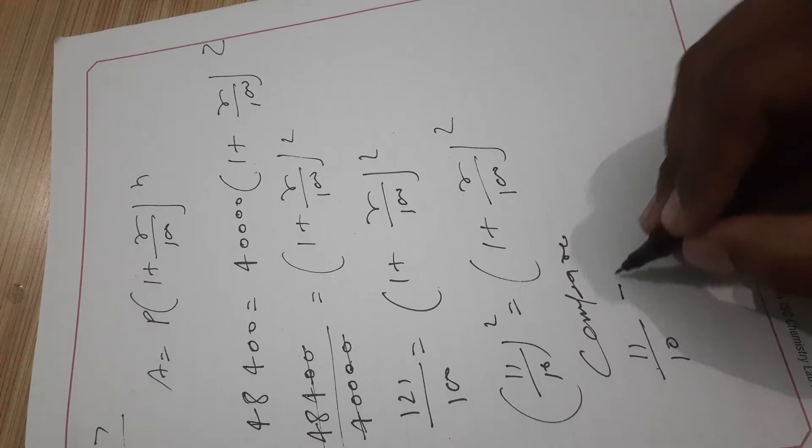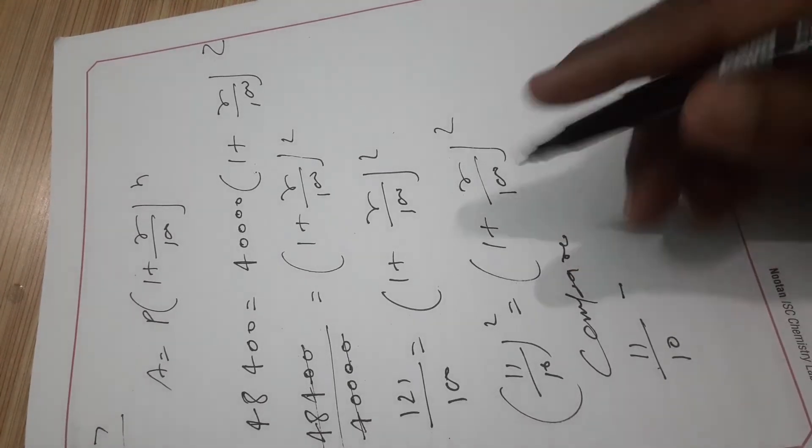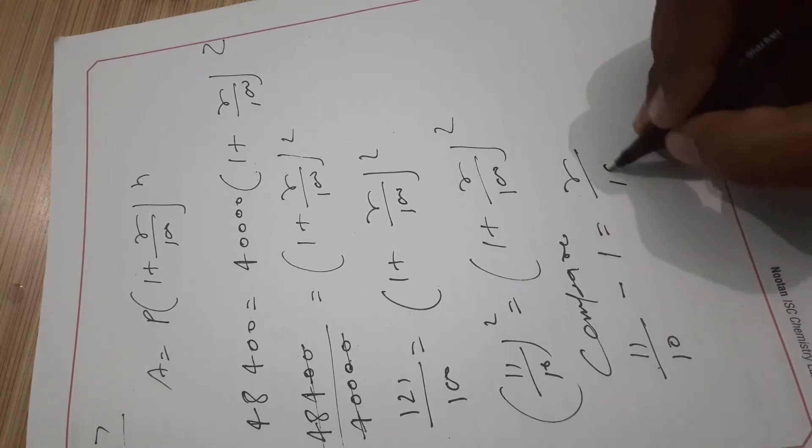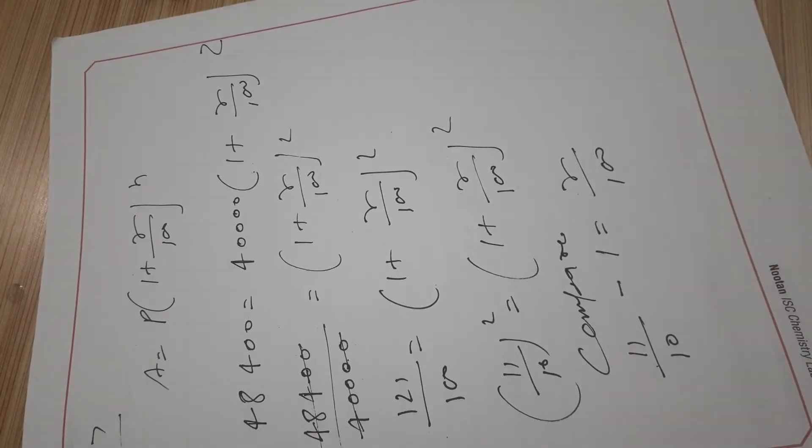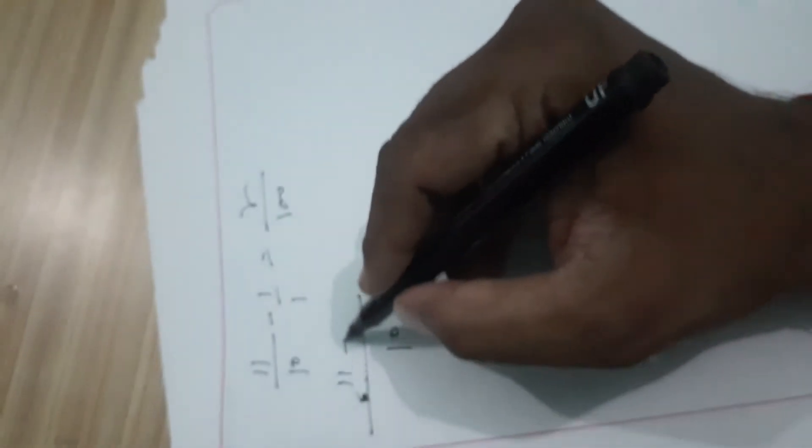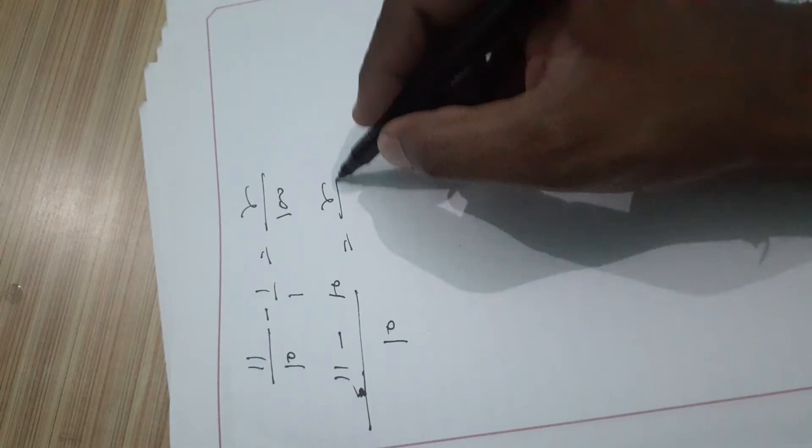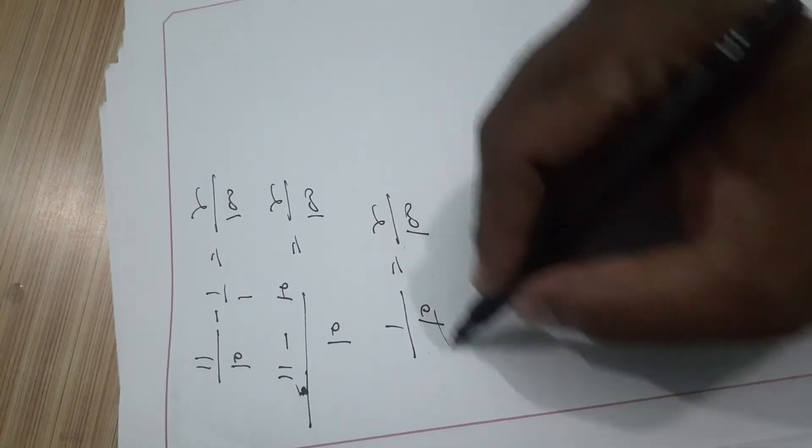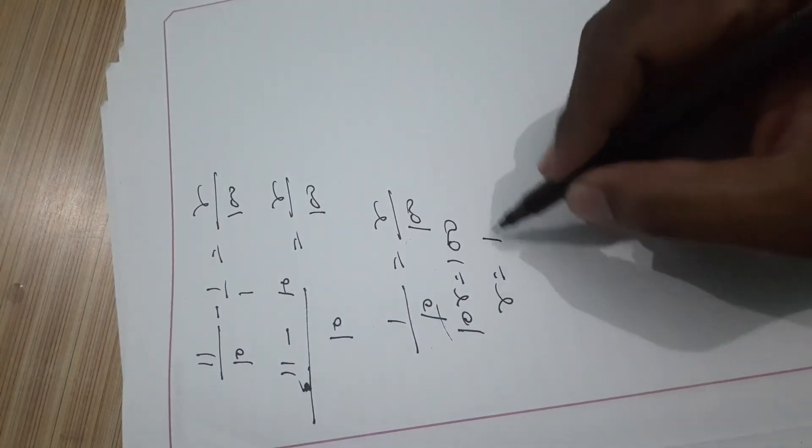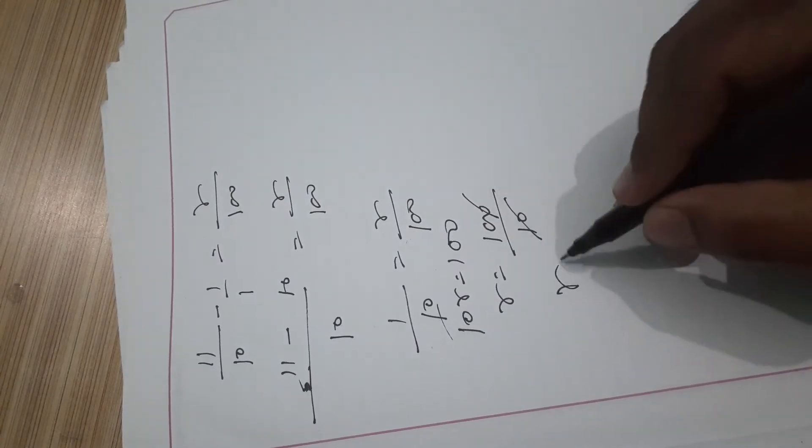So R/100 equals (11 minus 10)/10, which is 1/10. Therefore R/100 equals 1/10, so 10R equals 100. Canceling: R equals 100 by 10, which is R equals 10 percent.